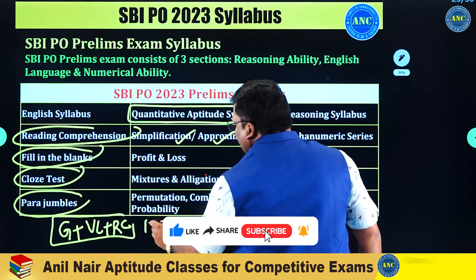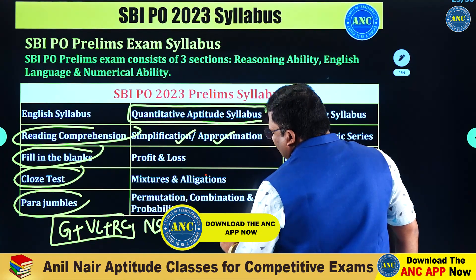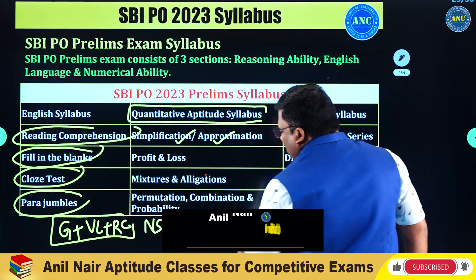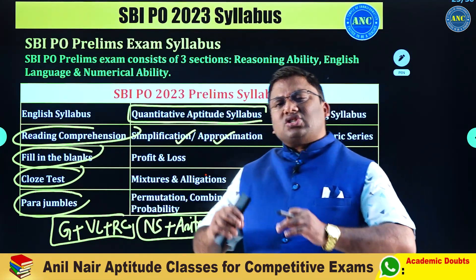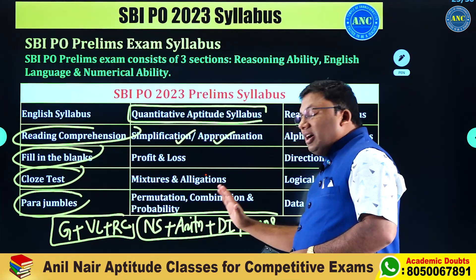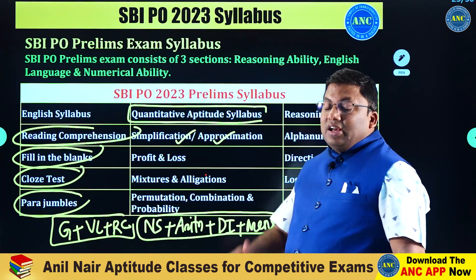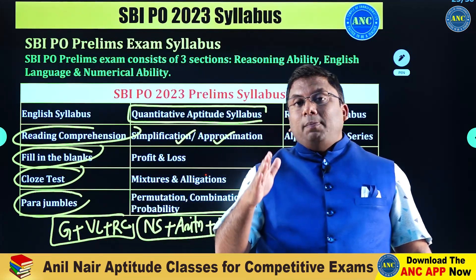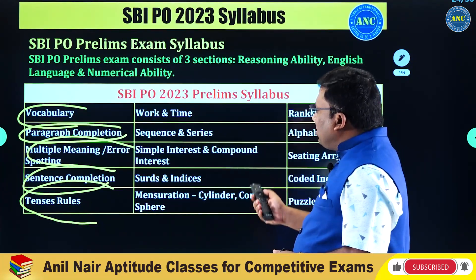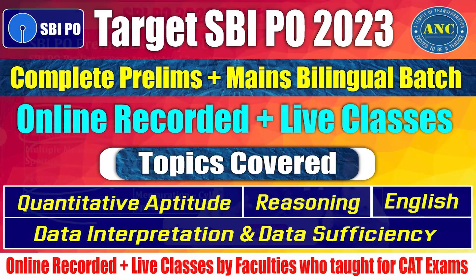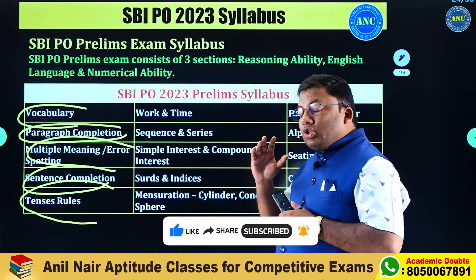The most important topics for SBI PO exam are number system, arithmetic, DI, and mensuration. In algebra, a few questions come from surds and indices. Most important topics are number system, arithmetic, and DI — these form the major chunk. Mensuration forms the minor chunk. Basic understanding and numerical value application should be very comfortable for you, and all arithmetic topics should be given importance.